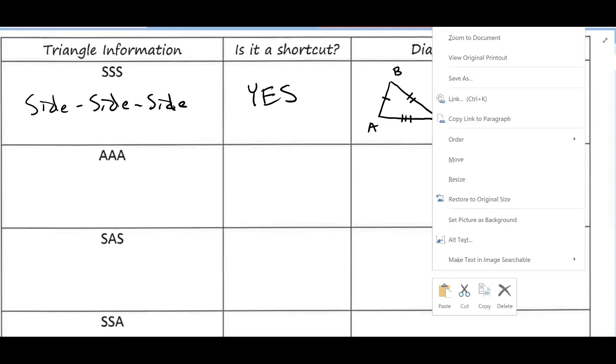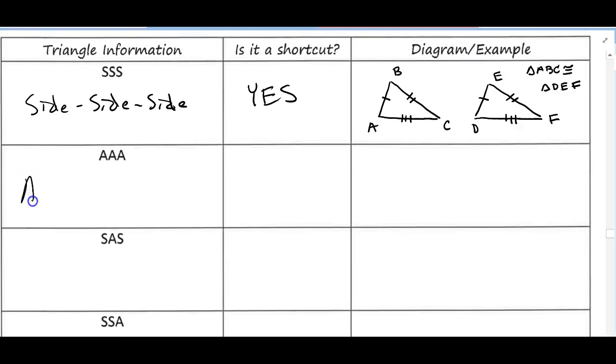All right, next, angle, angle, angle. So what you probably noticed by looking at all the different triangles in the classroom is that the triangles were all different sizes. They were all the same shape, but they were all different sizes. In order for them to be congruent, they have to be the same size and shape. So is it a shortcut? No.